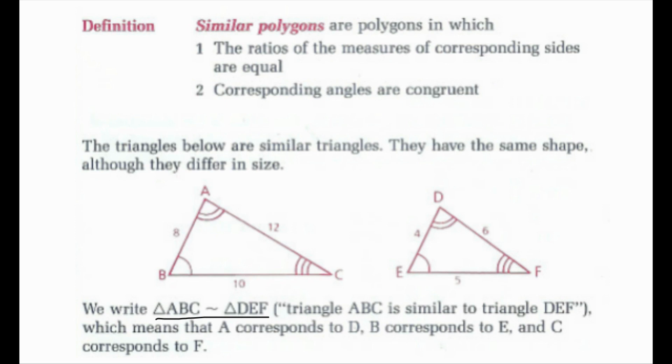It's the same as our congruence statement. However, now we don't have congruence, we have similarity. So we'd still say that A matches with D, B matches with E, and C matches with F.